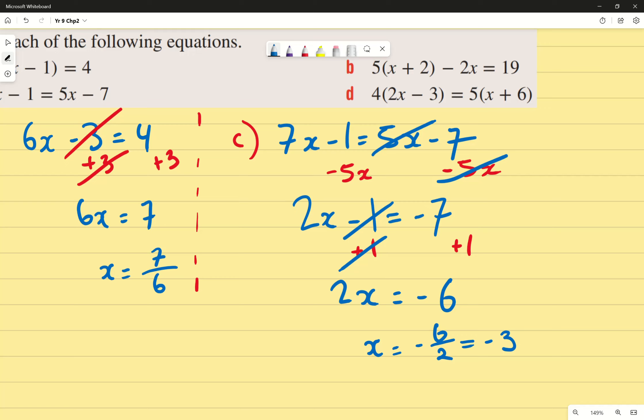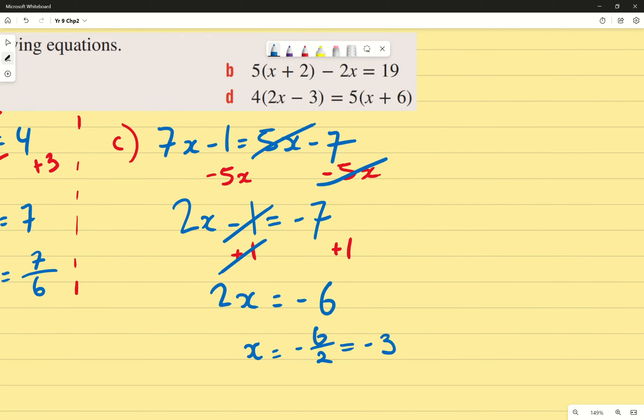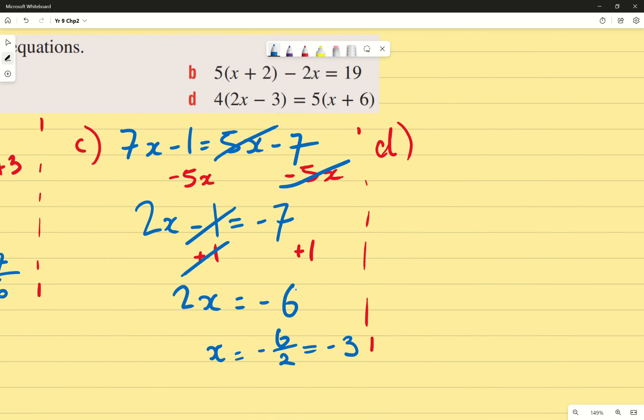Because if you have any questions, that would be a great time to ask before we move on to the trickier one. Okay. Last question, and then I'll let you get started. Question D has brackets and pronumerals on both sides. So it's 4 bracket 2x minus 3 equals to 5 bracket x plus 6. What was the first thing we do? Thank you very much. Expand.